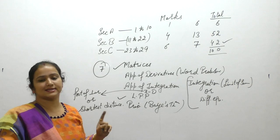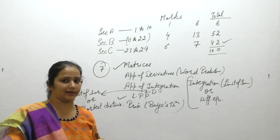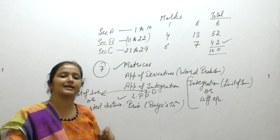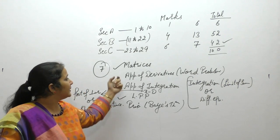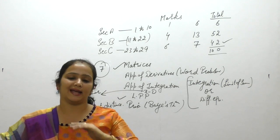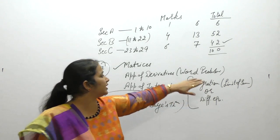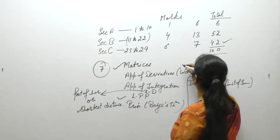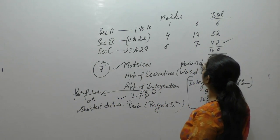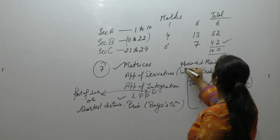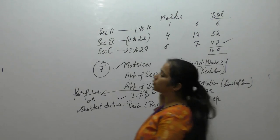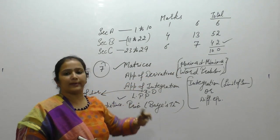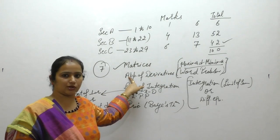For Section C, pick up the previous 10 years' question papers and solve all LPP questions from them — that's enough for LPP. For application of derivatives, the word problems exercise and questions related to maxima and minima — local maxima, local minima — these two topics are important in application of derivatives for 6 marks. You can prepare them using 10 years of Section C questions. Application of derivative: complete.